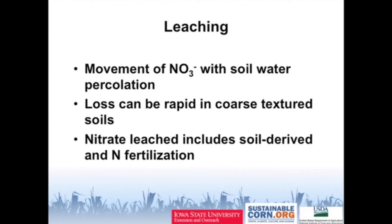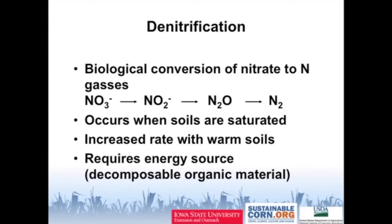Leaching is the percolation of nitrate out of the soil system through tile drainage or natural percolation through coarse-textured soils — a loss of nitrogen from the system. Nitrate that leaches comes from both soil-derived sources and fertilization, so it's not just from the fertilizer nitrogen we put in. Denitrification is the biological conversion of nitrate to N2 or nitrous oxide. It would be ideal if all conversion went to N2 gas, but through nitrification or other processes it sometimes stops at N2O, which causes greenhouse gas issues.